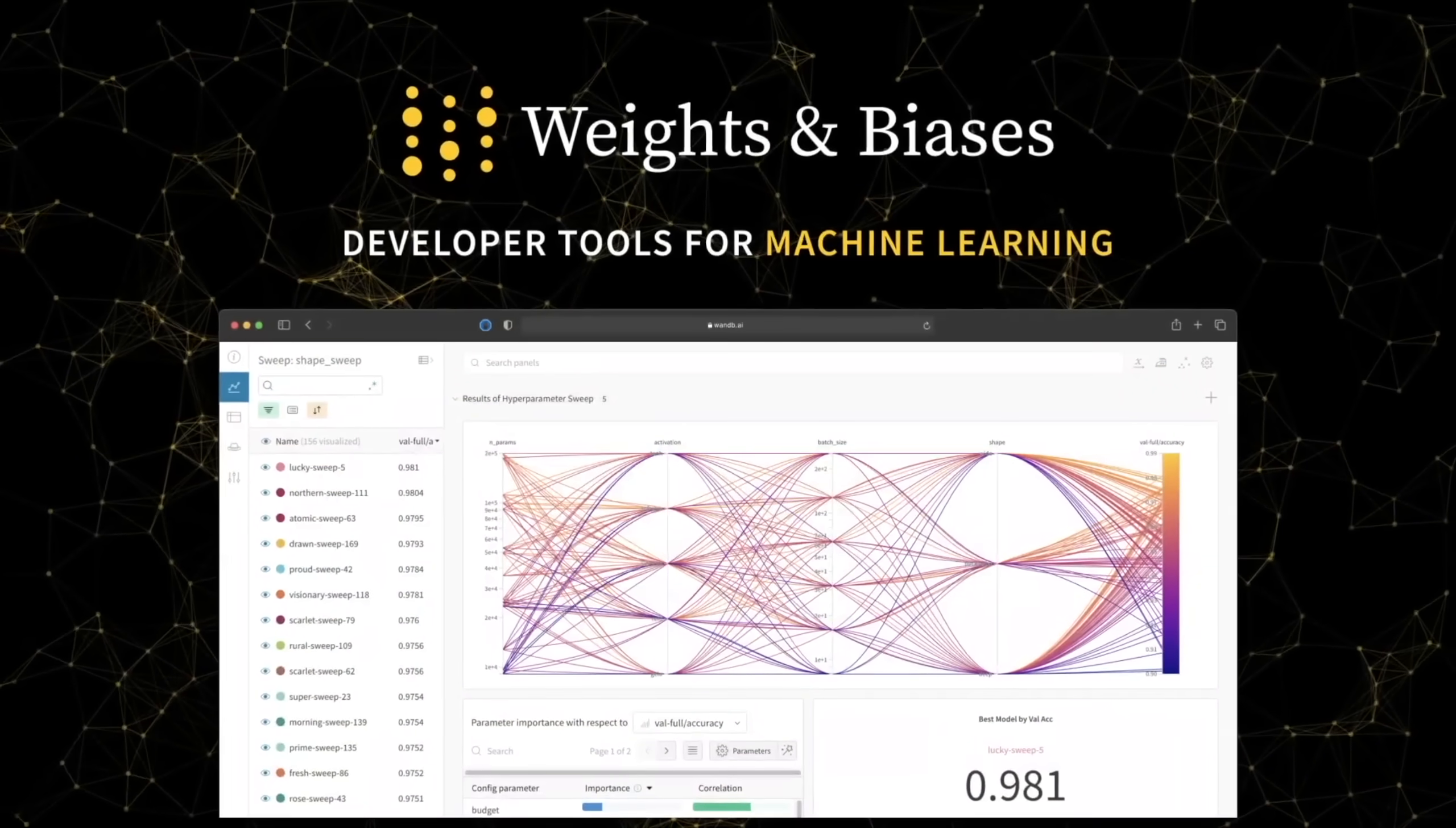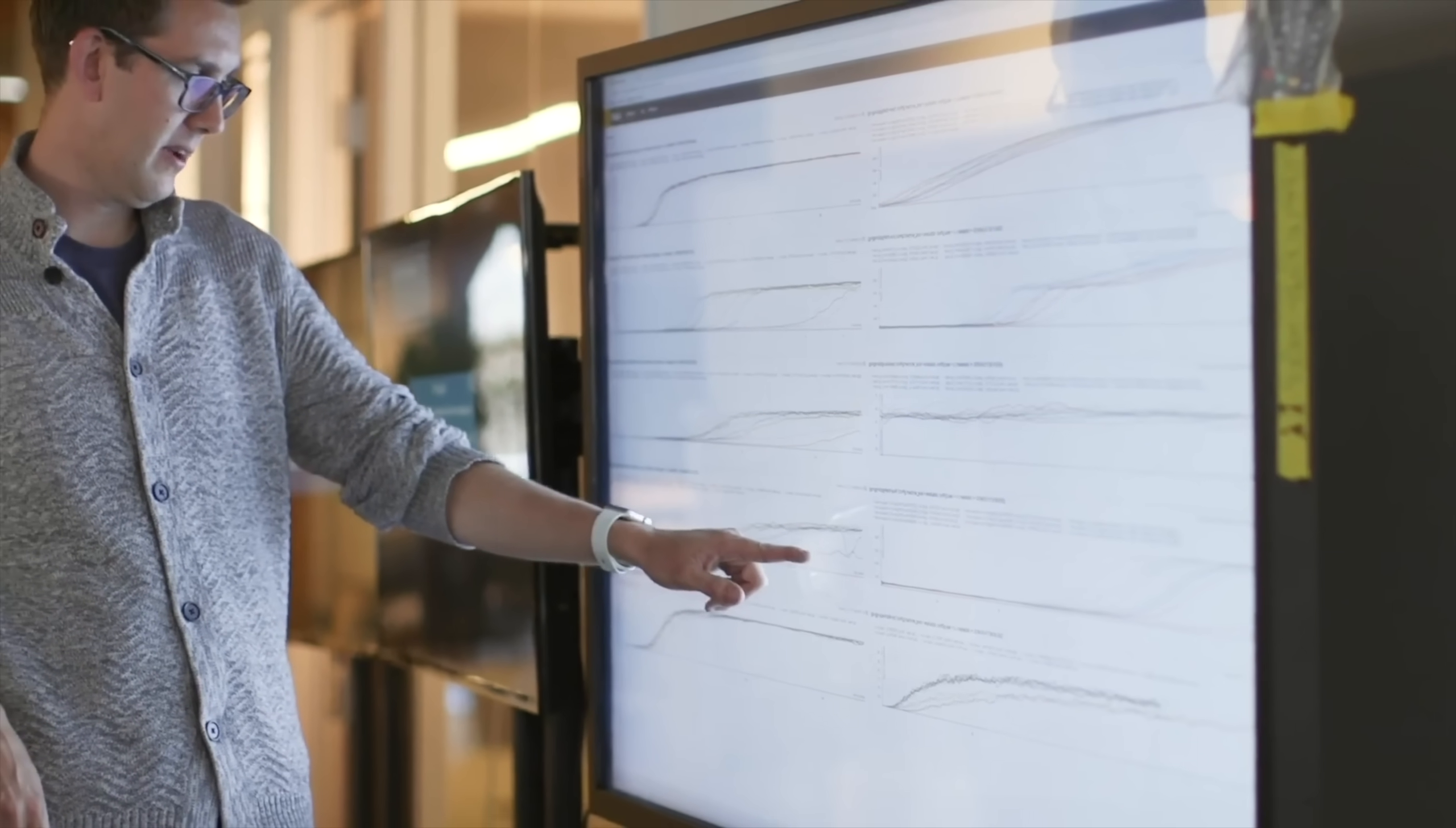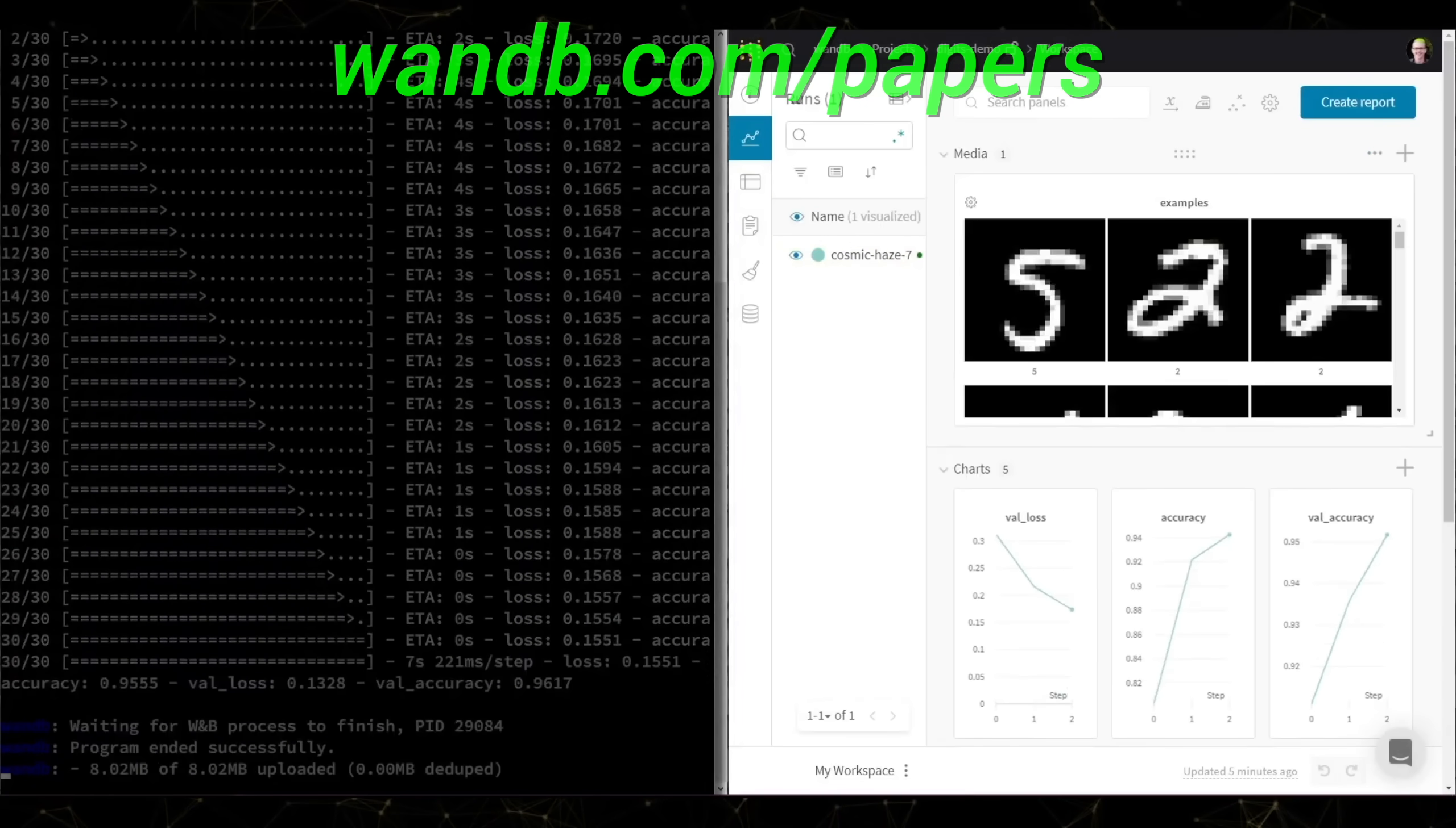Weights and Biases provides tools to track your experiments in your deep learning projects. What you see here is their tables feature, and the best part about it is that it is not only able to handle pretty much any kind of data you can throw at it, but it also presents your experiments to you in a way that is easy to understand. It is used by many prestigious labs, including OpenAI, Toyota Research, GitHub, and more. And the best part is that Weights and Biases is free for all individuals, academics, and open source projects. Make sure to visit them through wnb.com slash papers, or just click the link in the video description, and you can get a free demo today! Our thanks to Weights and Biases for their long-standing support and for helping us make better videos for you.